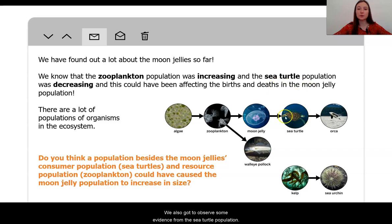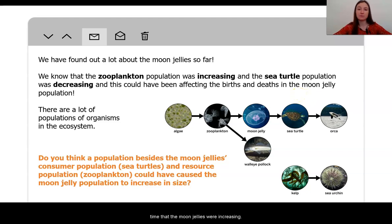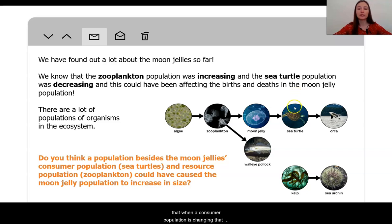This is so important because from our studies, we have figured out that the resource population can have a large effect on the number of births in the thing that consumes it. We also got to observe some evidence from the sea turtle population, and we found that it was decreasing about the same time that the moon jellies were increasing. From all of the evidence we've been collecting, we have seen that when a consumer population is changing, that can affect the number of deaths in their resource population.